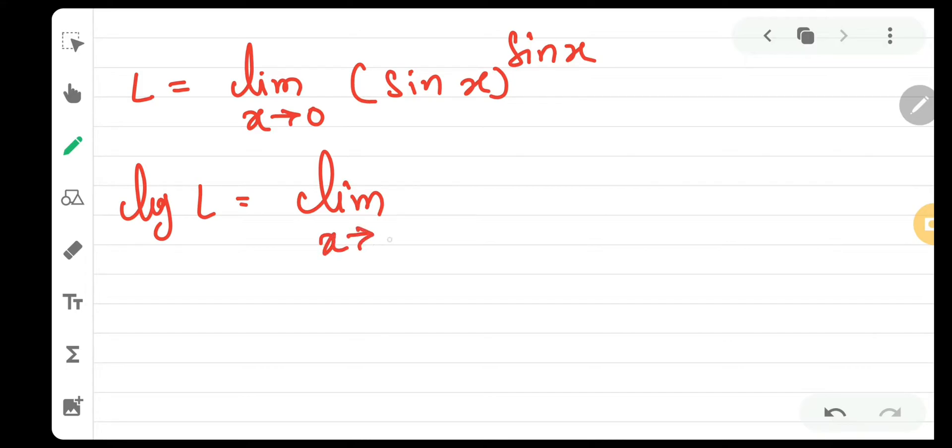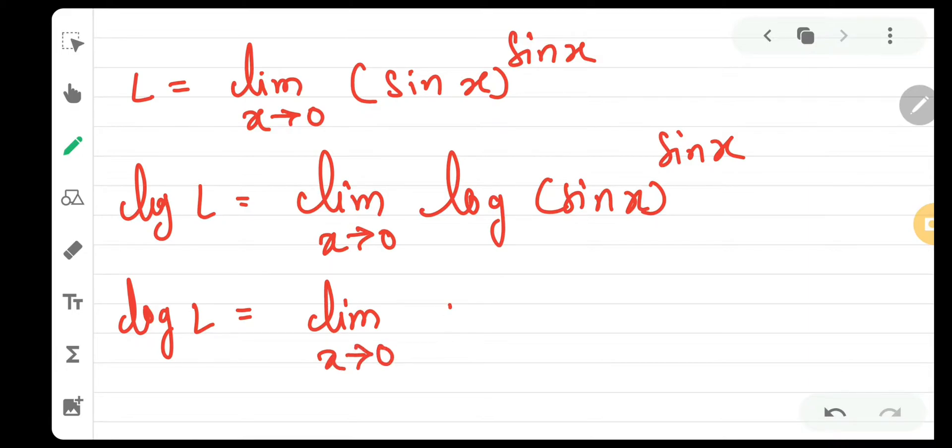This will turn into limit x tends to 0 log of sin x the whole raised to sin x. And we have the formula for log of m raised to n. n will come down. So, this will turn into log l is equal to limit x tends to 0 sin x into log of sin x.